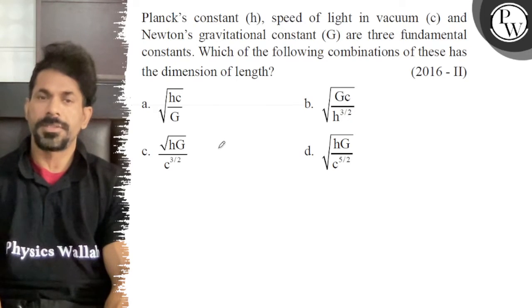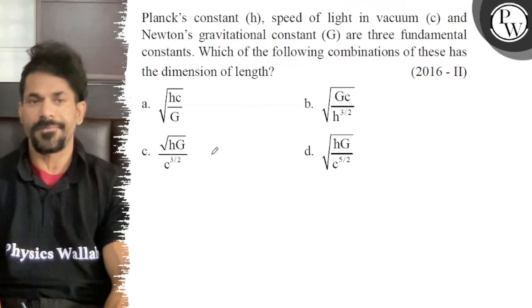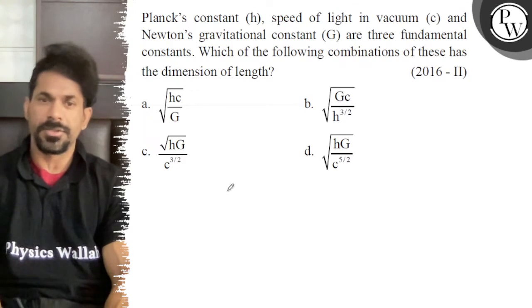Hello. Let's look at the question. Planck's constant h, speed of light in vacuum c, and Newton's gravitational constant G are three fundamental constants. Which of the following combinations of these has the dimension of length?